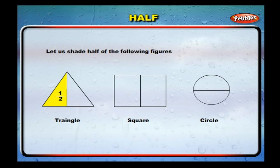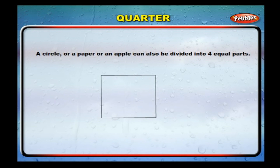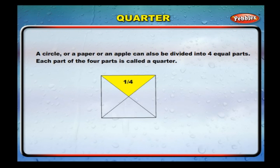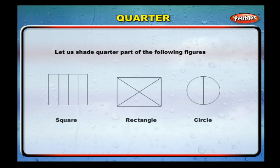Let us shade half of the following figures: shade half of this triangle, shade half of this square, shade half of this circle. Quarter: a circle, a paper, or an apple can also be divided into four equal parts. Each part of the four parts is called a quarter. It is written as 1/4 and read as one by four. Let us shade the quarter part of the following figures: shade quarter part of this square, shade quarter part of this rectangle, shade quarter part of this circle.